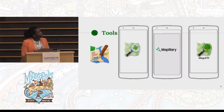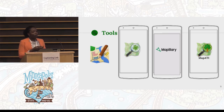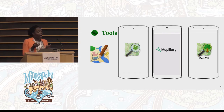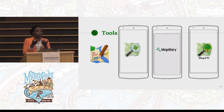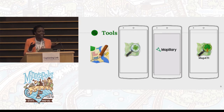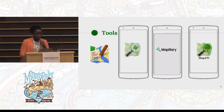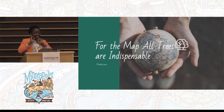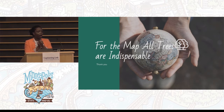Firstly, we will use OpenStreetMap software. For the future, we will develop or create the MapATI software, which can work offline, because we want to use it in Africa where we have problems with internet access, and to allow everyone to use the MapATI software. We must note that in mapping, all trees are indispensable to protect our environment.